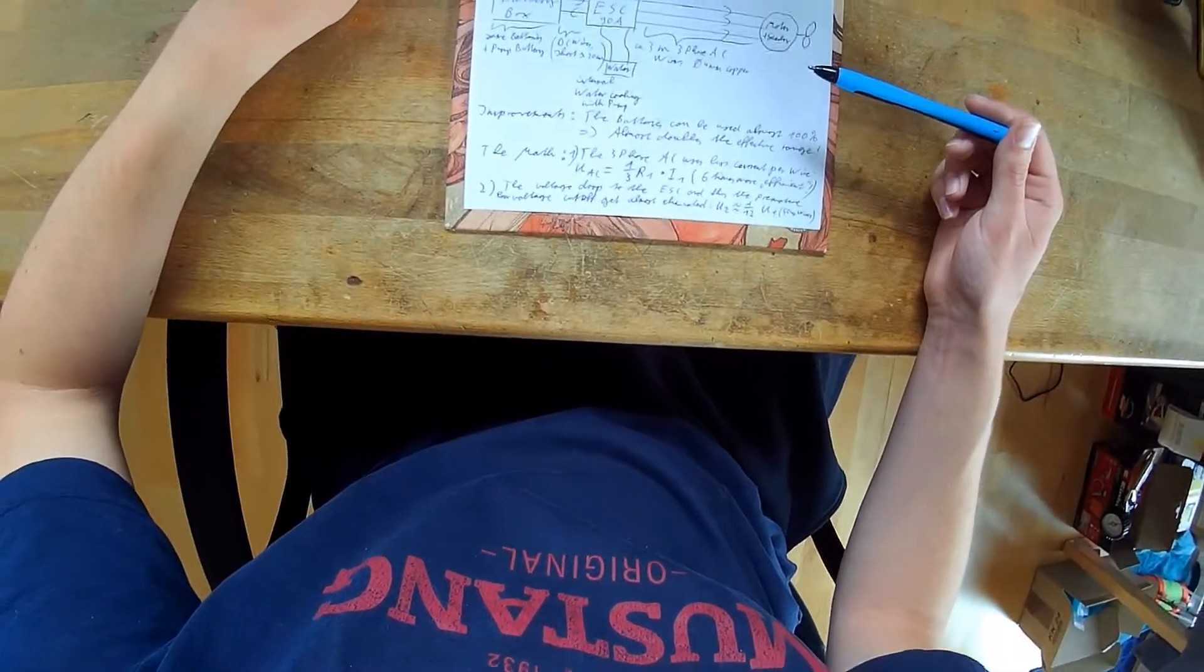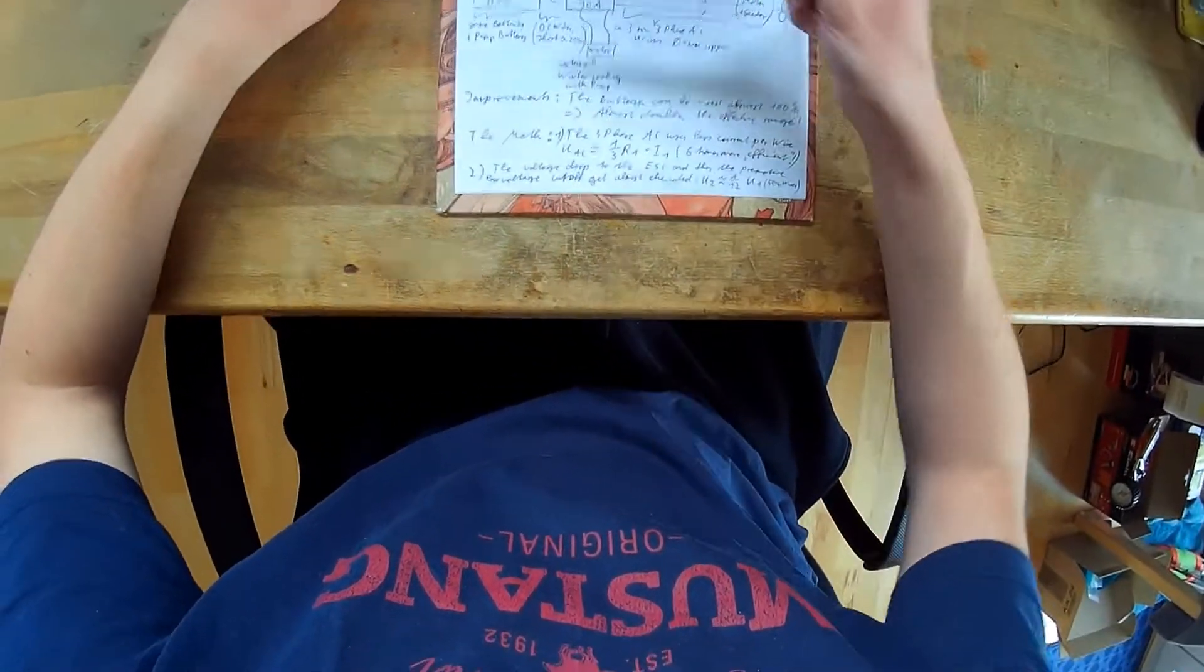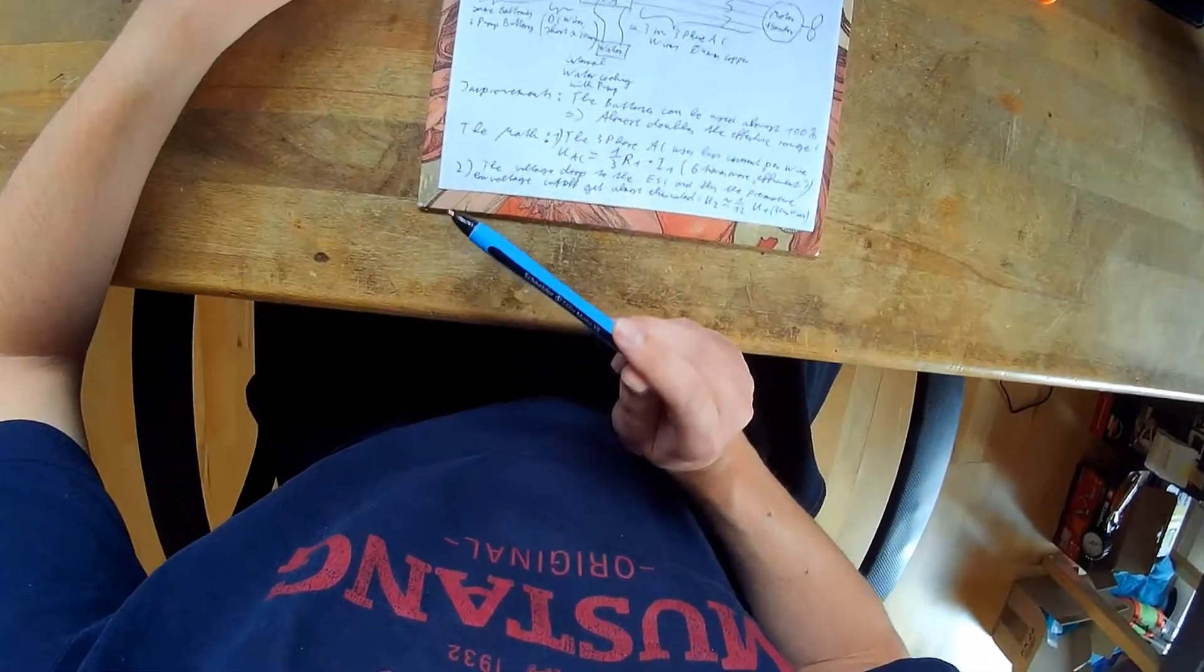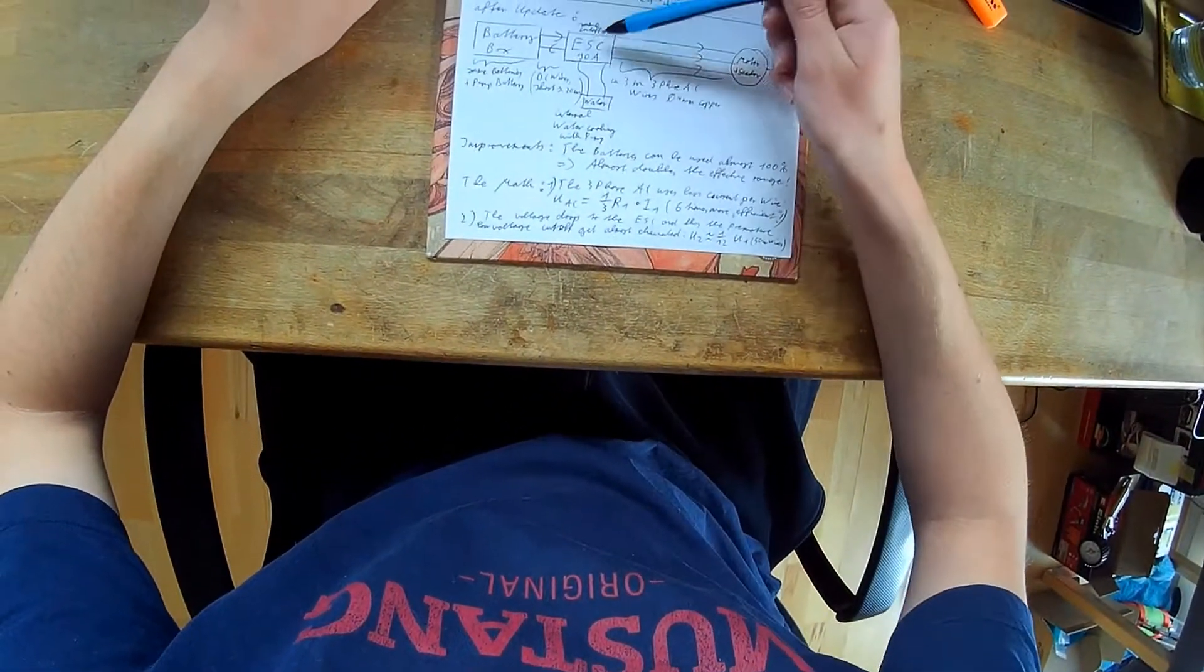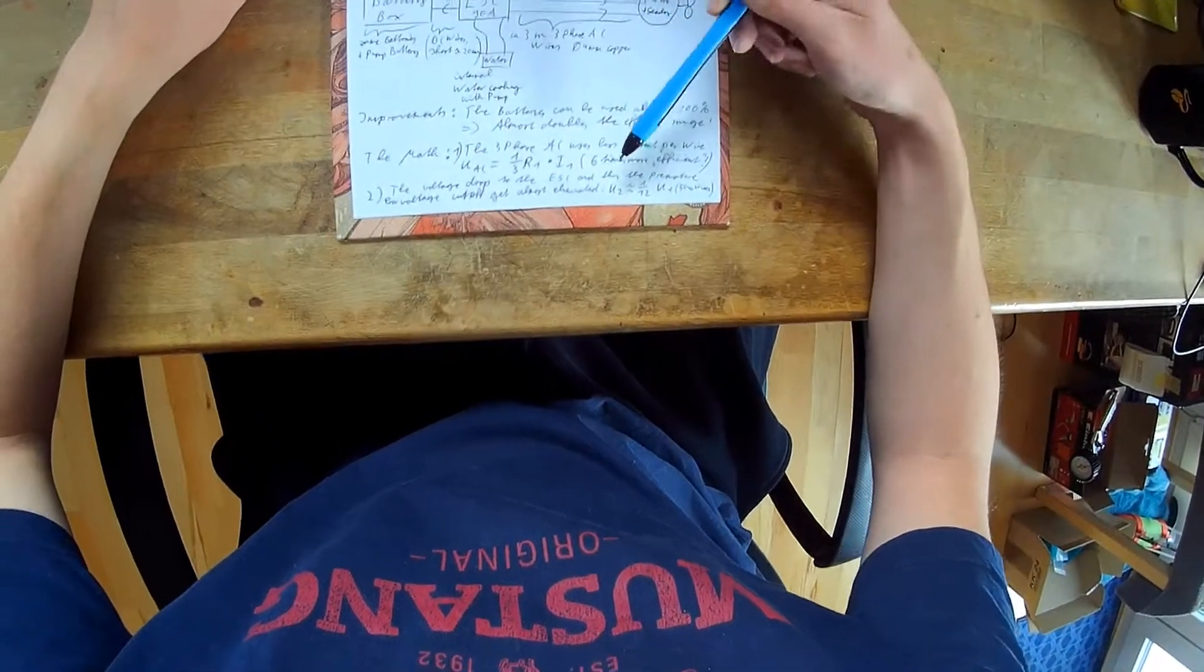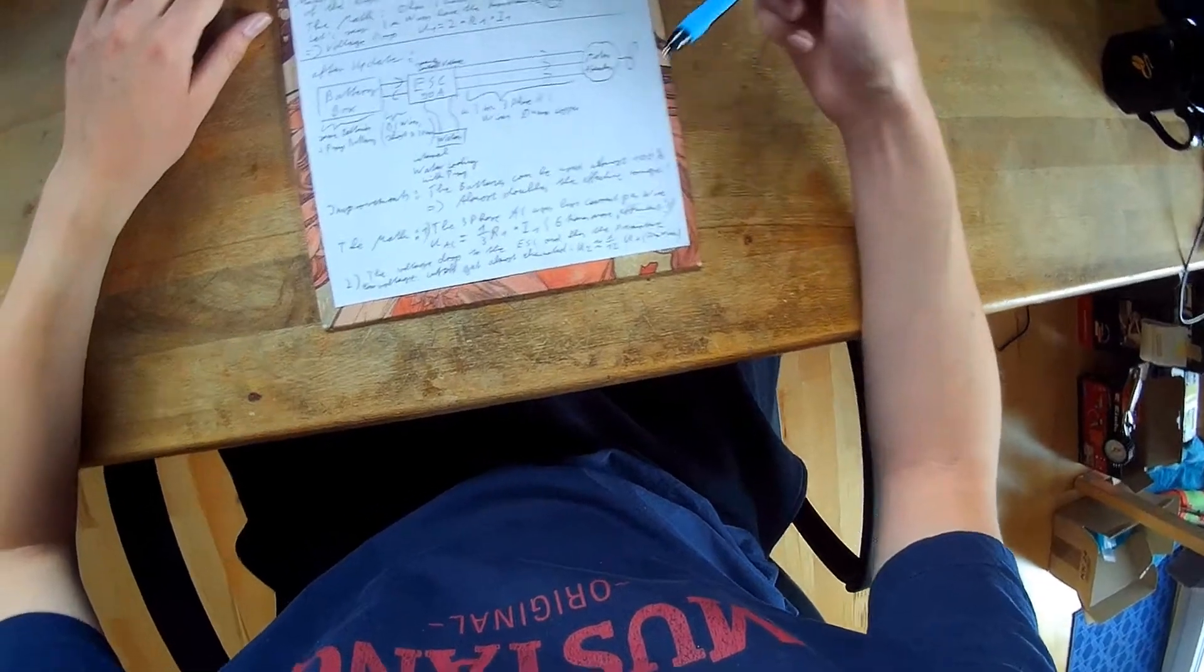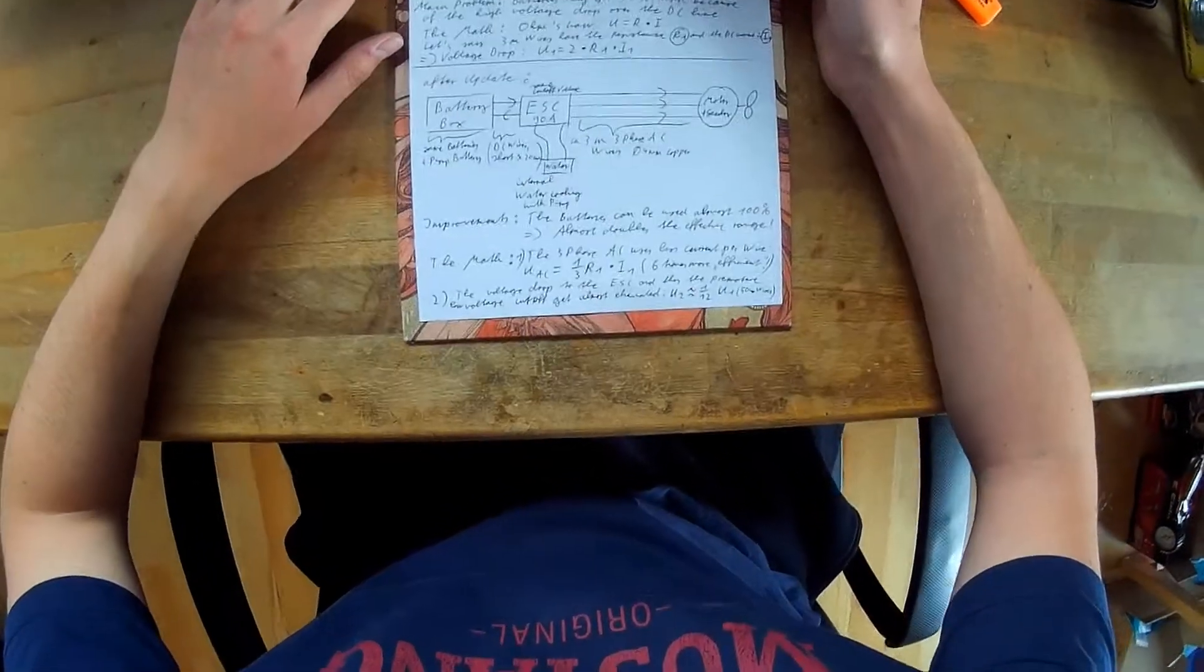And the voltage drop to the ESC, between the battery box and the ESC is even smaller, because we only have about 50 cm wires going back and forth. So the voltage drop is only about one-tenth, one-twelfth of the voltage drop in the first system.